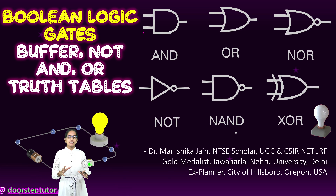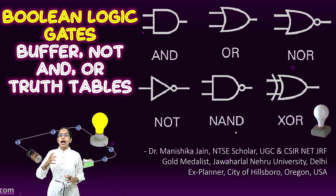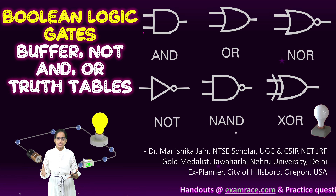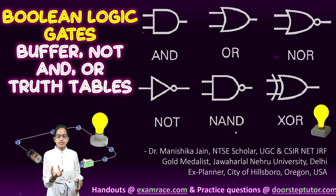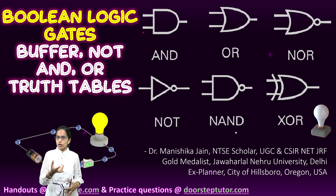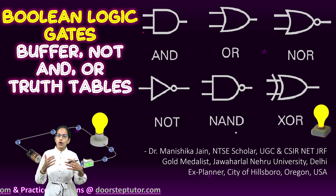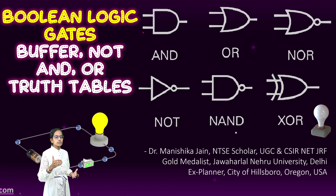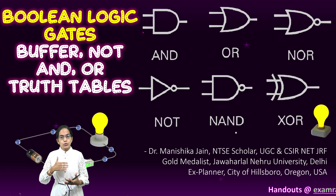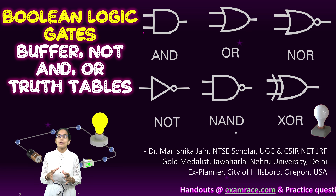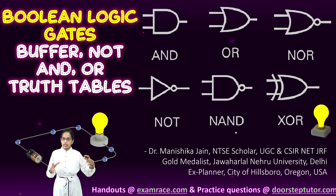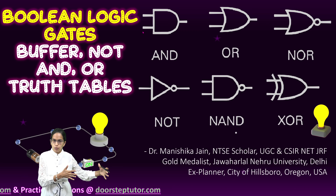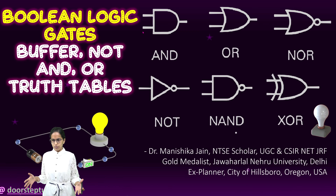Behind every digital circuit lies the logic, and these are expressed through logic gates. These logic gates function on a concept of binary, which is zero or one. A simple example is a bulb — it is either on or off, meaning zero or one. These are known as Boolean logic gates, after Boole, and they have a very close similarity with symbolic logic, which we study in philosophy. In coming lectures we would understand symbolic logic and the difference between Boolean logic and symbolic logic.